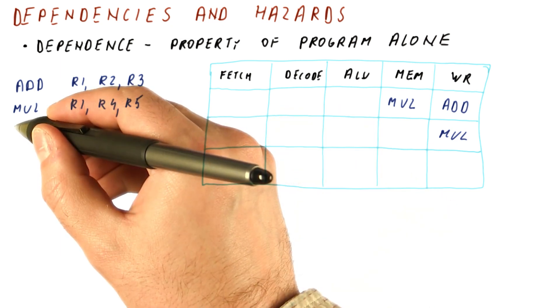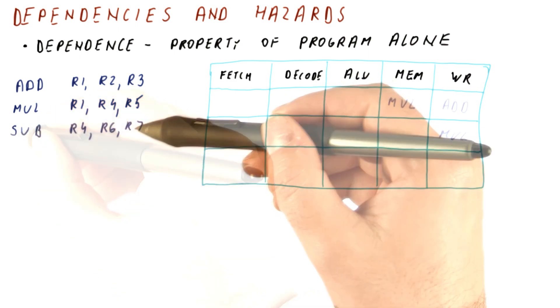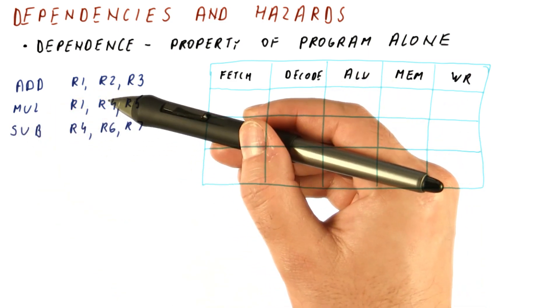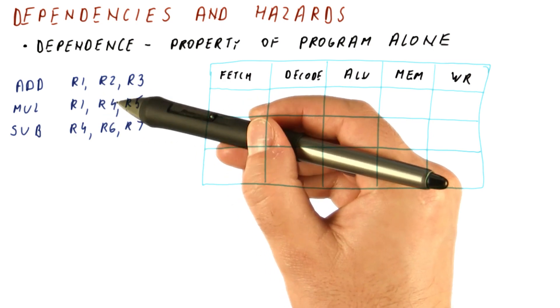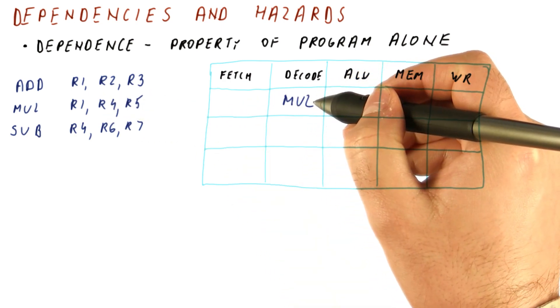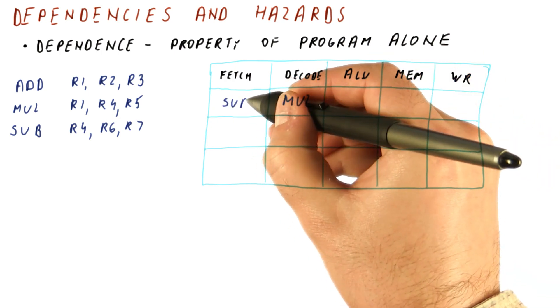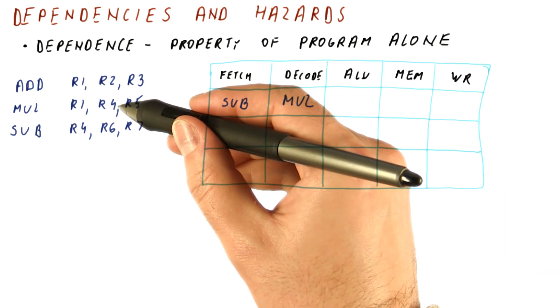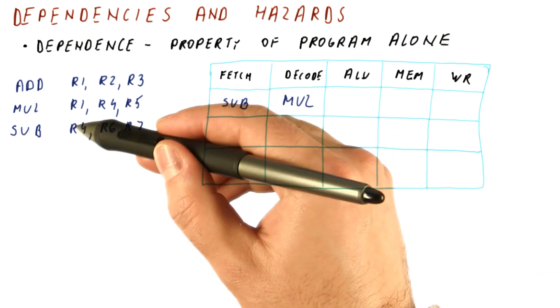Now let's consider a write after read dependence. Let's say that there is a subtract instruction here that overwrites R4 that was read by the multiply. At the point where multiply reads R4, the subtract is being fetched.